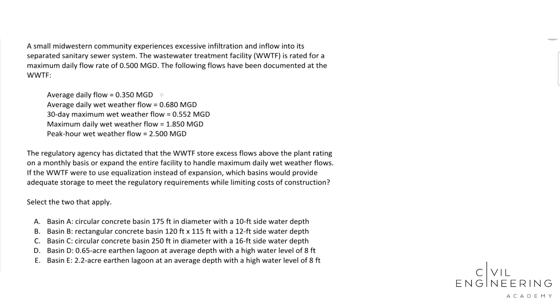The average daily flow is 0.35 MGD. The average daily wet weather flow is 0.68 MGD. The 30-day max wet weather flow is 0.552 MGD. The maximum daily wet weather flow is 1.85 MGD. And lastly, the peak hour wet weather flow is 2.5 MGD.